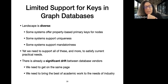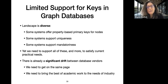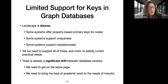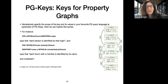Looking at the existing landscape, graph processing systems enforce constraints differently: some support only primary keys for nodes, others only unique constraints, others only mandatory nodes. If we want to support all of these together, there is nothing that does so. We wanted to study how to define keys for property graphs — PG-Keys. We present a syntax inspired by Cypher in which you declaratively specify the scope of the key and the values on which you define the key.